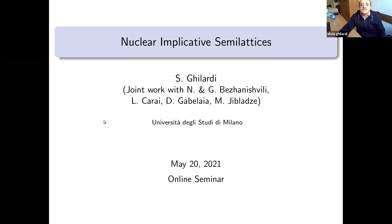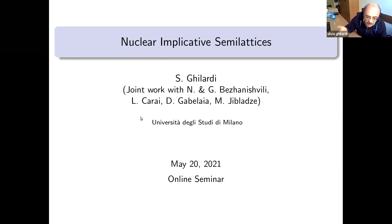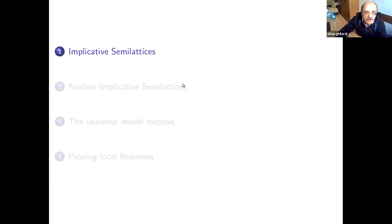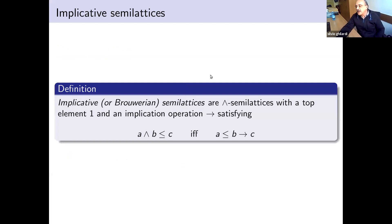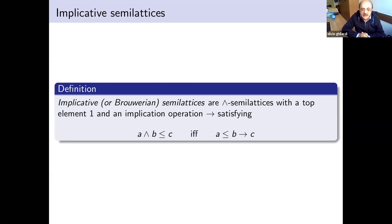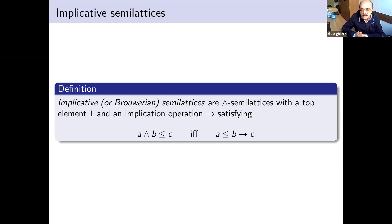The story is about nuclear implicative semilattices. In the first part of the talk I will review some more or less standard stuff. We start with the definition of implicative semilattices, which correspond to the implication and conjunction fragment of intuitionistic logic. You have a semilattice which is a commutative monoid and you have the conjunction as a residuation, so there is an implication.